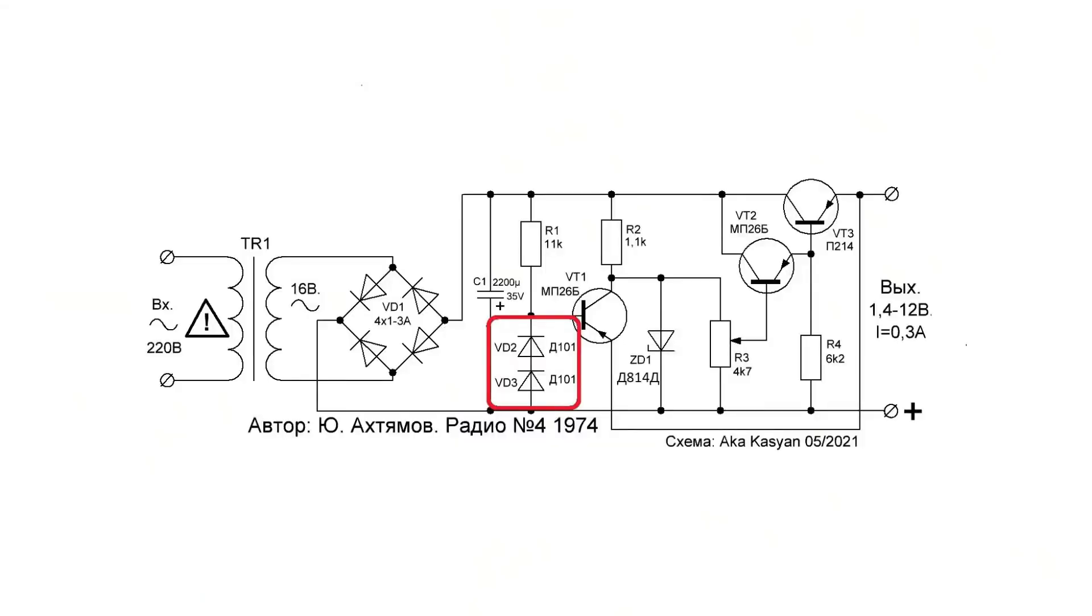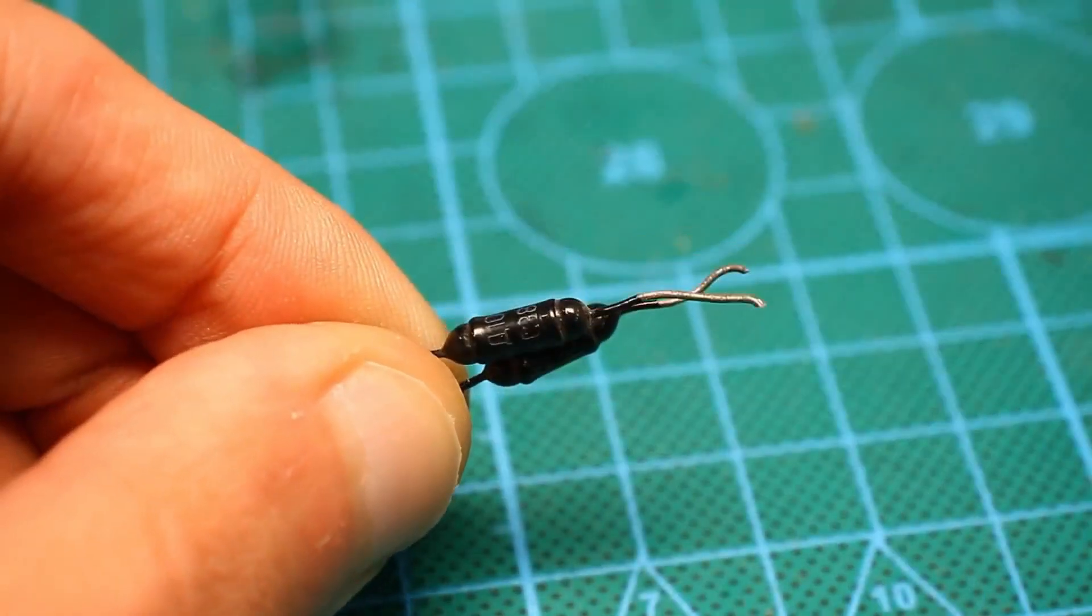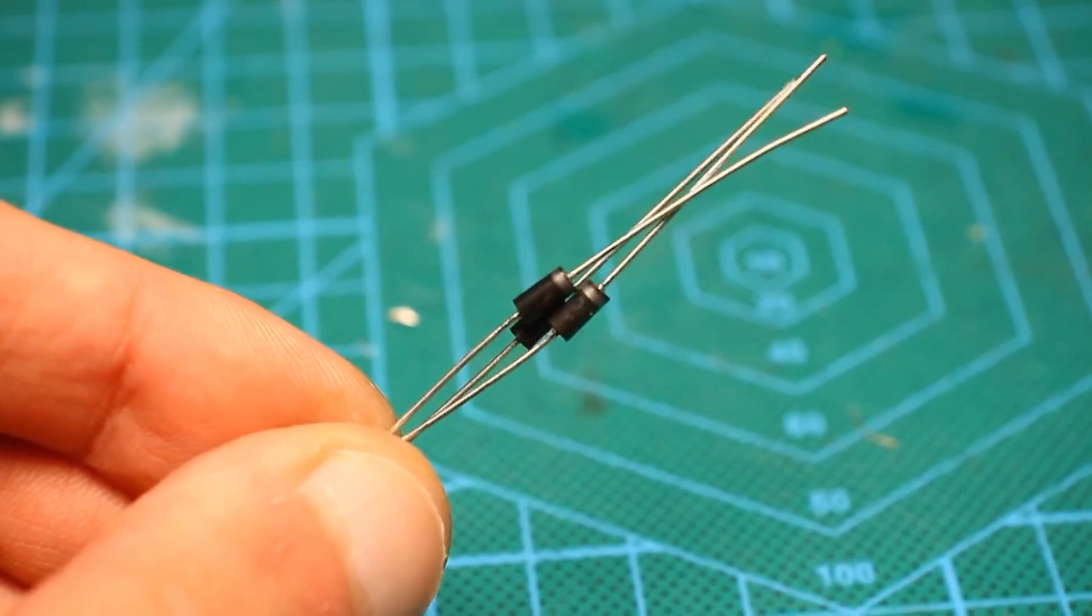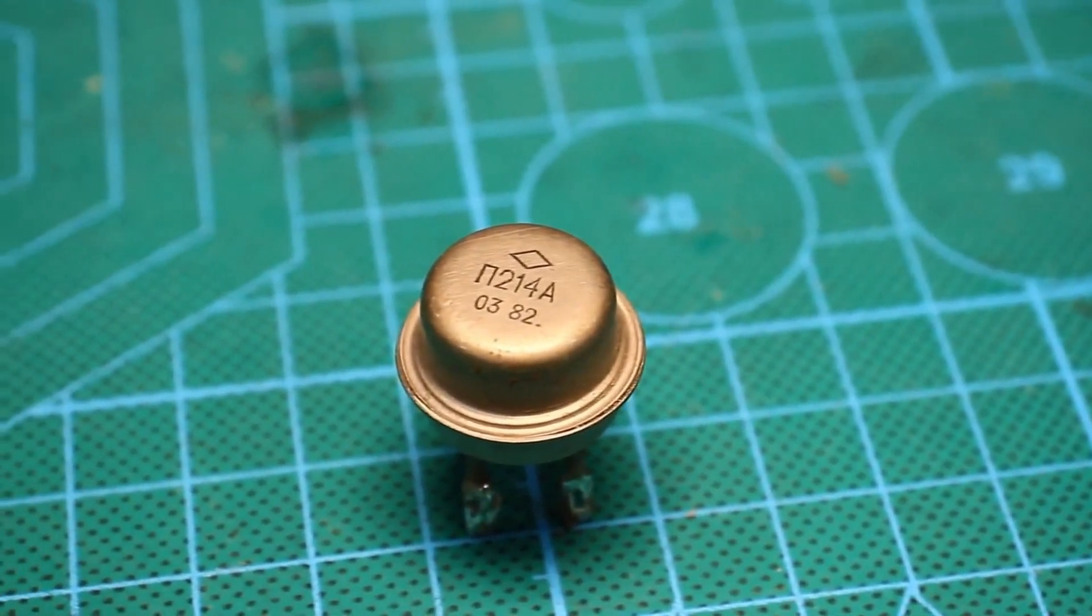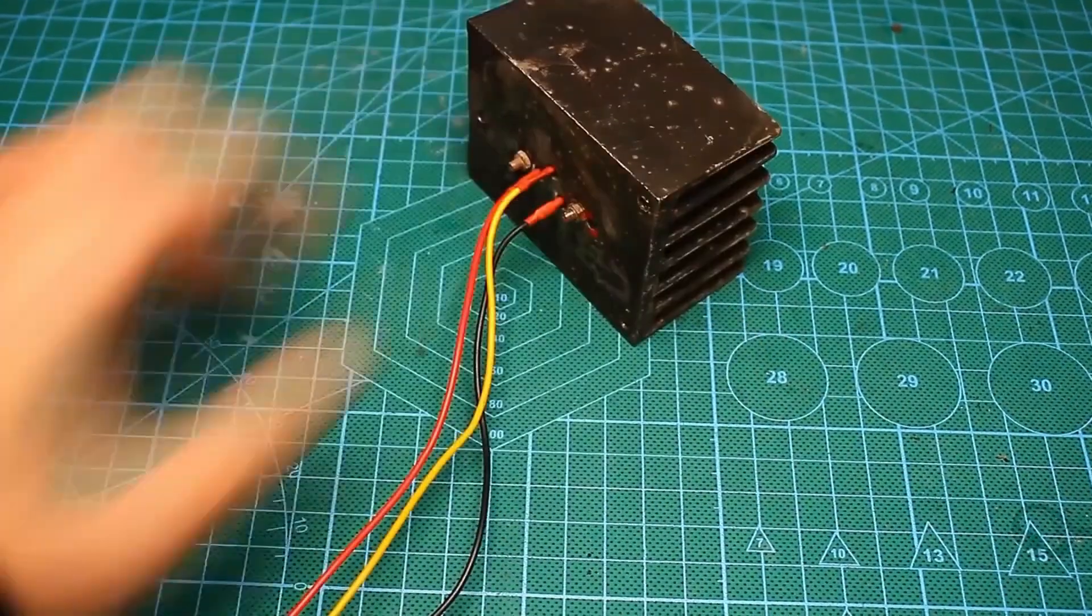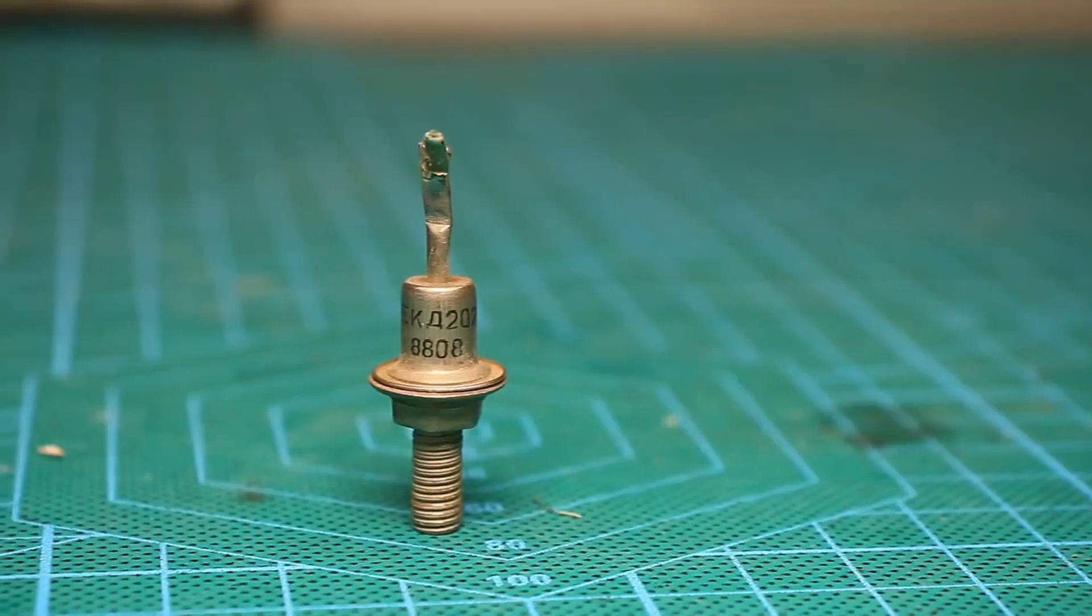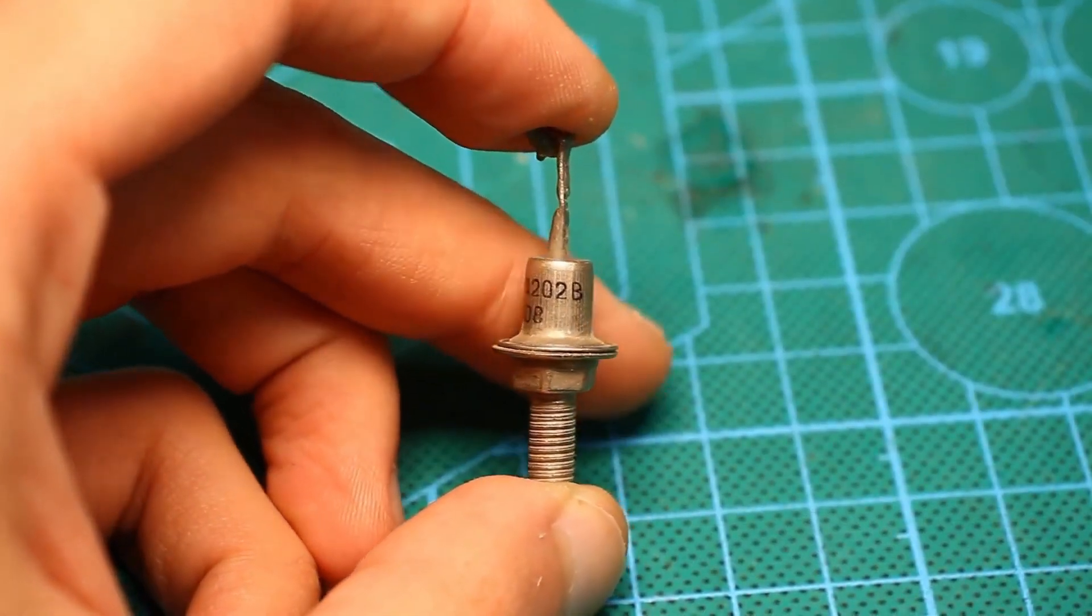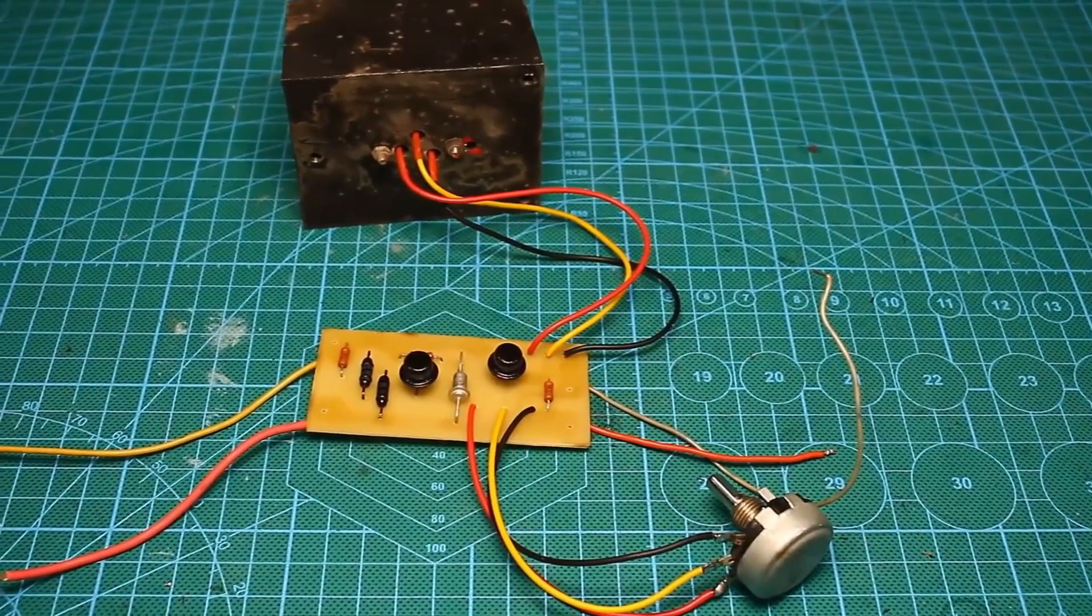Components. Diodes D101 can be replaced with similar ones, for example D104. But these dinosaurs are long gone, and from modern ones you can use, for example, diodes UF4007 and similar ones. The power transistor can be replaced with any from this series 215, 16, 17. It is important to mount the ladder on a large heatsink, applying thermal paste beforehand.